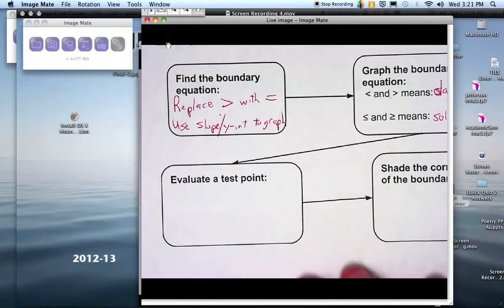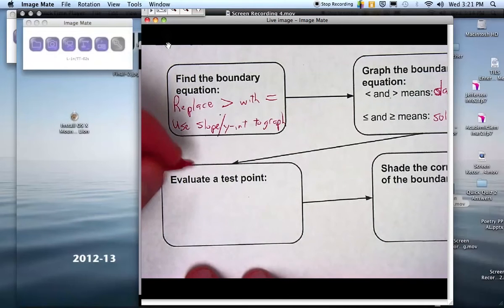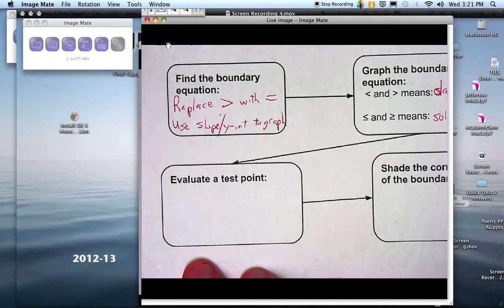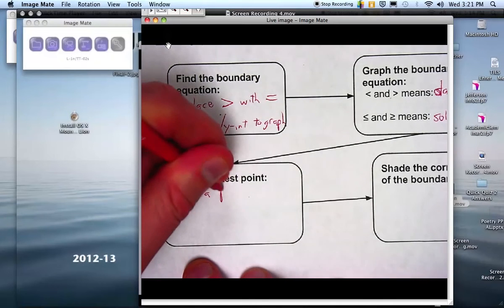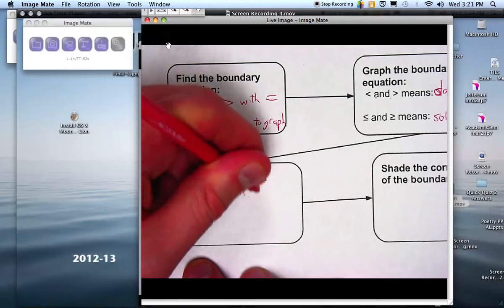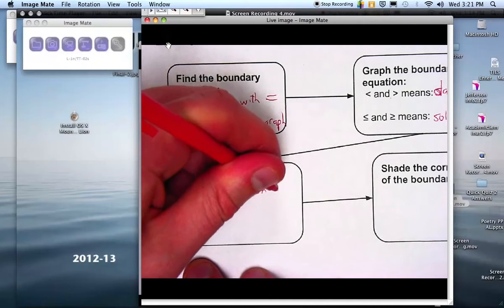You are then going to do a test point, just like we do in the one-variable case. And the way that's going to work is you're going to pick a point on one side of the line or the other. Don't pick a point on the line and plug it into the inequality. So pick a point on one side of the line.